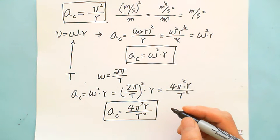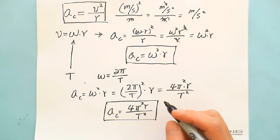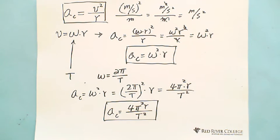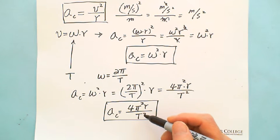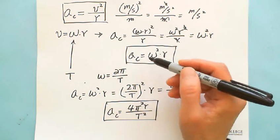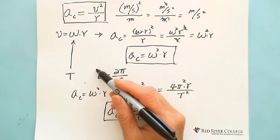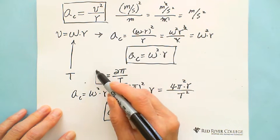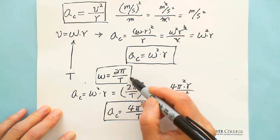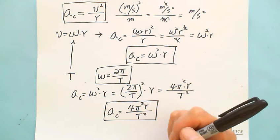Depending on the given information, you can choose one of the formulas. You can memorize the first two, and combine them to get the third.